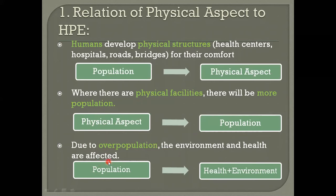The third point: due to overpopulation, both the environment and health are affected. Wherever there are more facilities, there will be more population, and wherever there is more population, there will be more pollution and the health of people will also be affected. So overpopulation negatively impacts environment and health.